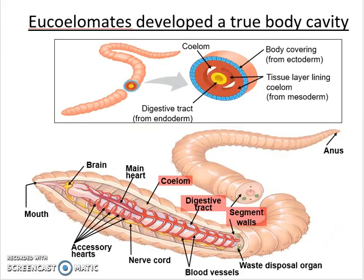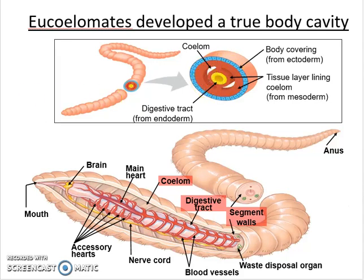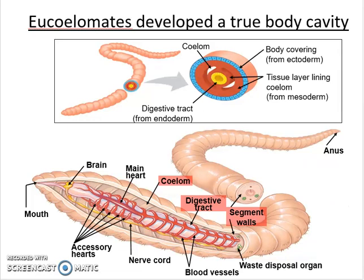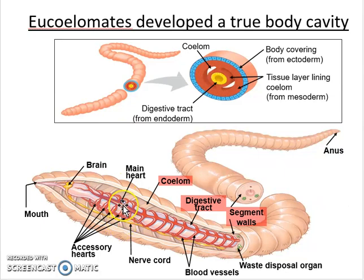Moving to the eucoelomates — those with a true body cavity coming exclusively from the mesoderm — they have a fluid-filled coelom surrounding the digestive area. Not only do eucoelomates have a true body cavity, but they now have a complete digestive tract with both a mouth and an anus, allowing one-way movement of food. Another important feature is body segmentation: they repeat body patterns along the entire length of the animal, meaning one set of genes codes for the body pattern and gets duplicated over and over.